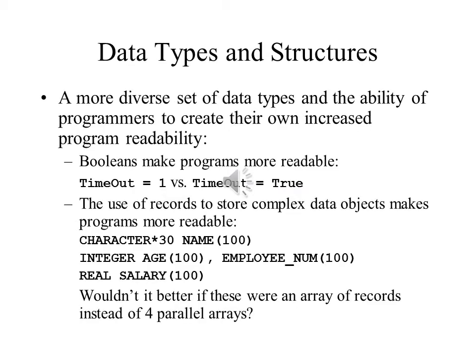Originally, the only data types available were integers of various sizes — most commonly 8, 16, 32, and 64 bits — and floating point numbers of various sizes. But it became clear very quickly that you needed a way to store character data, and eventually this led to EBCDIC, ASCII, and more recently Unicode: numeric codes that represented printable characters and non-printable or control characters. But that wasn't the whole story.